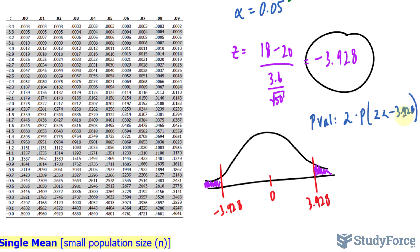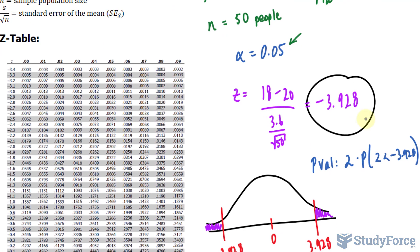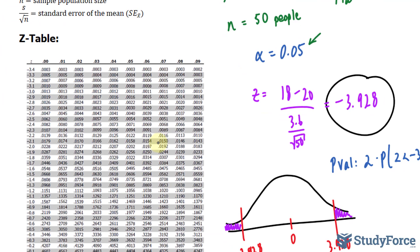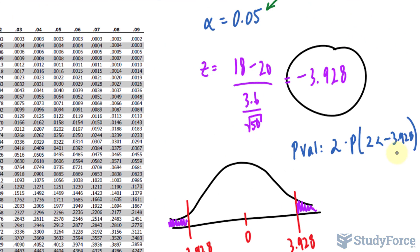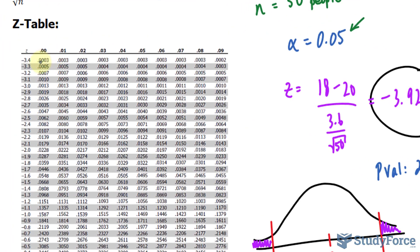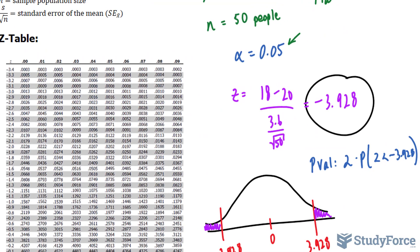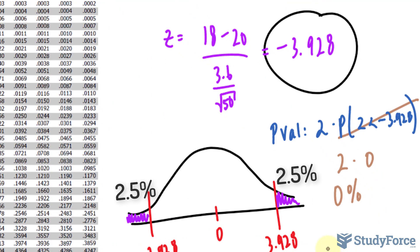Using the z-table here with all our values, the smallest value here is negative 3.4. This is negative 3.9. And negative 3.4 gives us 0 as the probability. So, we can say that this whole thing becomes 0, 2 times 0. If we interpret this as 0%, it barely goes beyond 2.5%, which represents those tail ends.